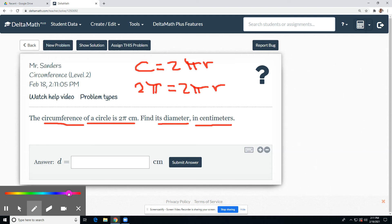What keeps r from being by itself? The 2 pi. The opposite of multiply by 2 pi is divide by 2 pi. Do it to both sides. I get 1 equals r.